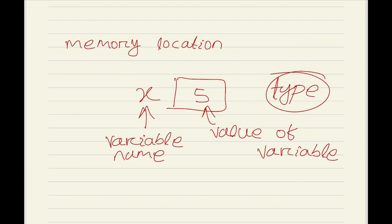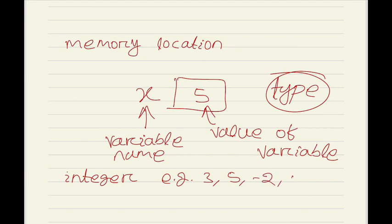For example, one type is integer, which is going to store or hold only integer values, for example 3, 5, minus 2, 0, like this.